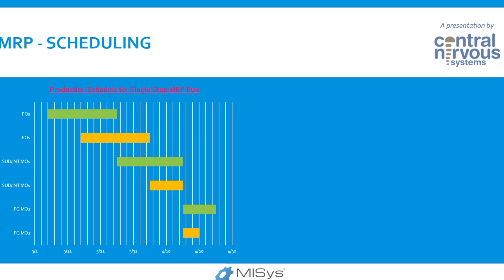However, because they have different cycle times, their starts seem to coincide with each other. When you do the backward scheduling with the MRP logic in MySYS, you notice that the sub-assemblies or intermediary manufacturing orders' completion dates are lining up with the start date of the finished good manufacturing orders, because that is the backward scheduling — it wants to make sure the finished good has the required intermediate or sub-assemblies ready on the day it's going to start running. From that point it creates purchase orders, trying to make them all available on the day the sub-assembly is going to start running.